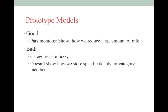The prototype model also doesn't show how we store specific details for category members — feature comparison does, but prototype model doesn't. There's a trade-off between the two. But it is a very parsimonious model — it shows how we take all that information, all those features, and reduce them into this prototype picture.